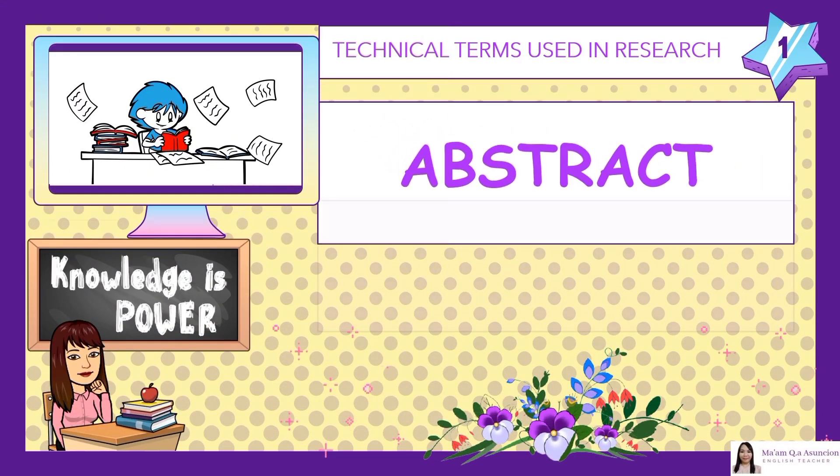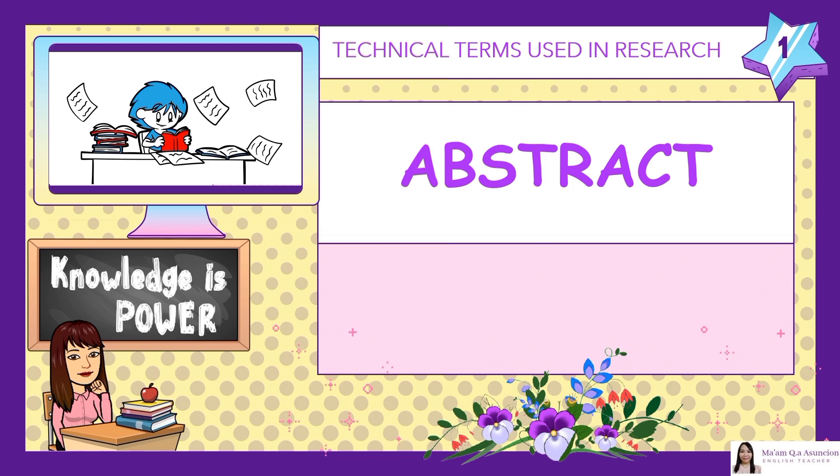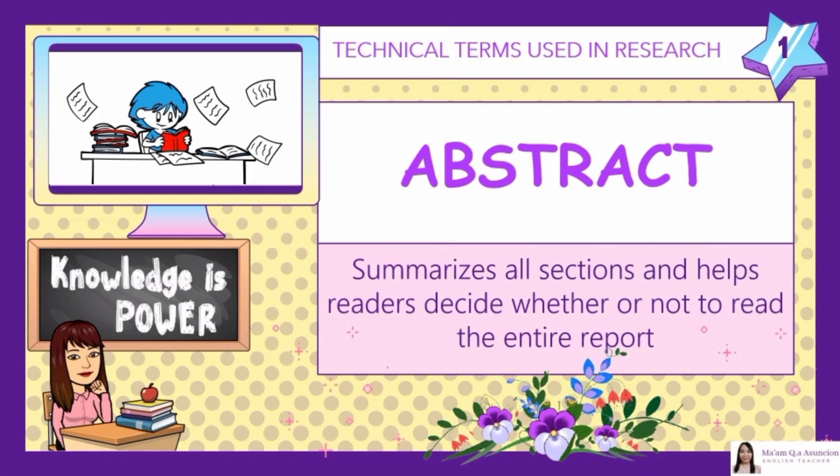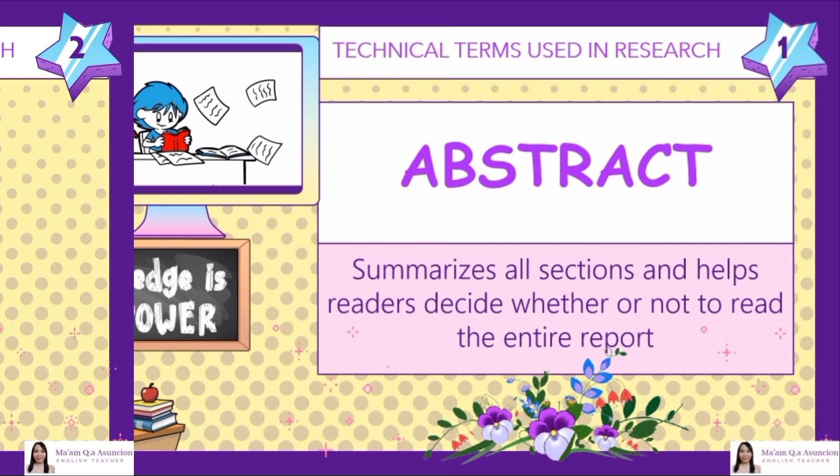Number 1: Abstract. Summarizes all sections and helps readers decide whether or not to read the entire report. This is a brief summary of our research study and its results. It should tell you why the study was done, how the researchers went about it, and what they found.